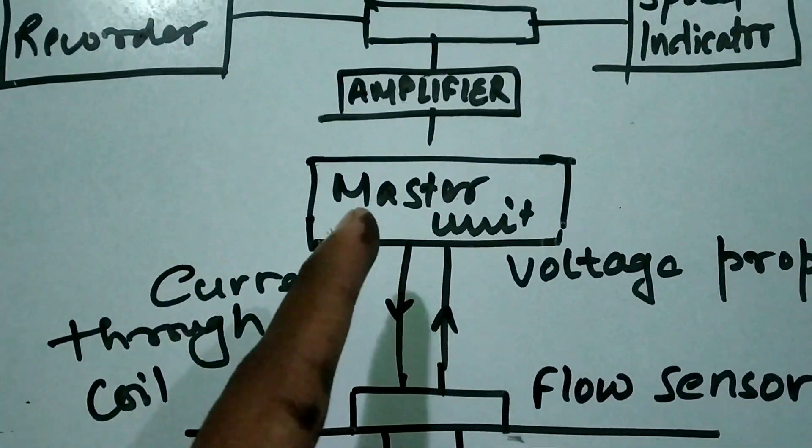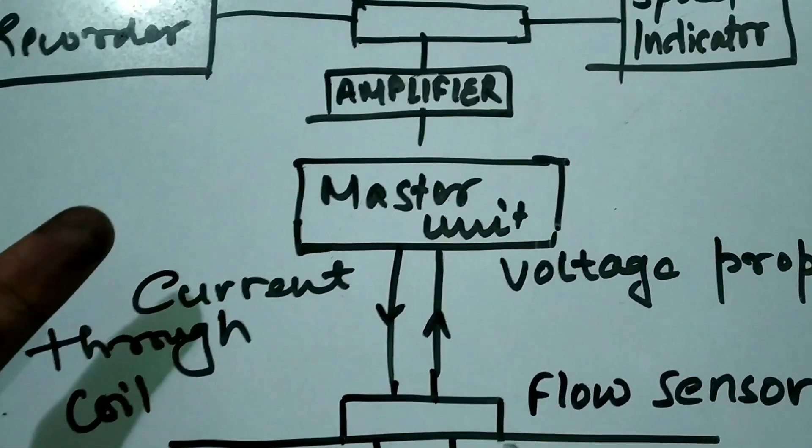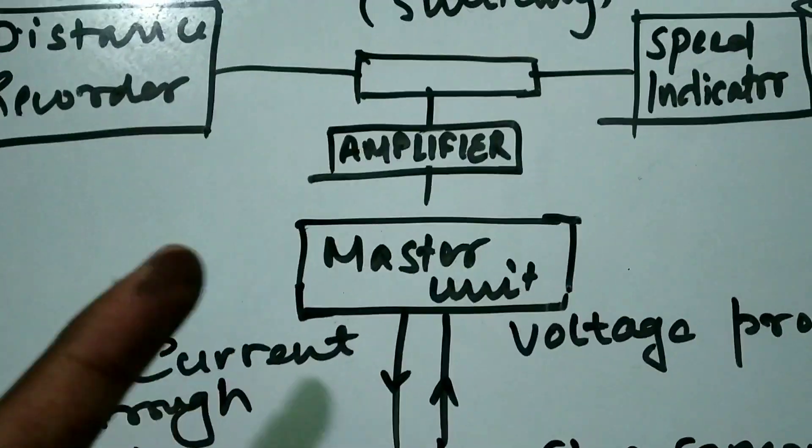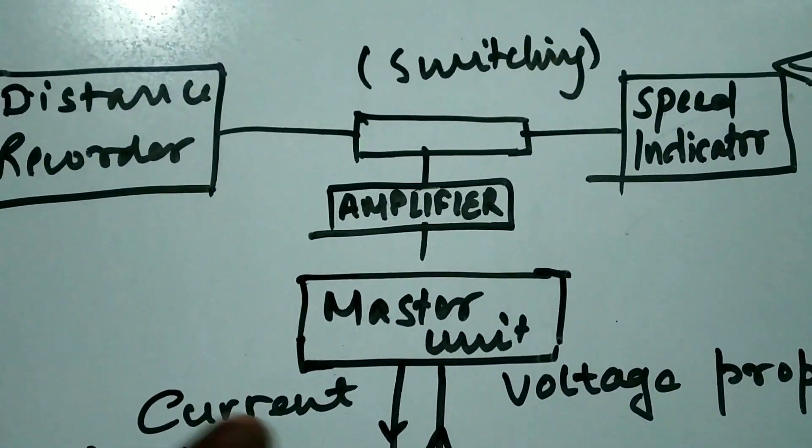From here it goes to the master unit. As we know, the signals are not that strong, so they need to be amplified. It passes through the amplifier, then finally to the distance recorder and the speed indicator.